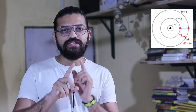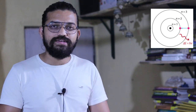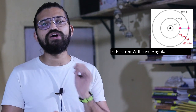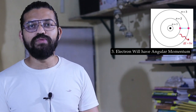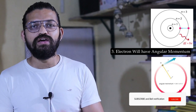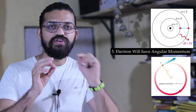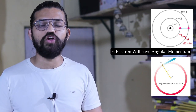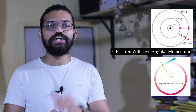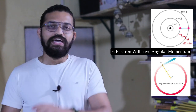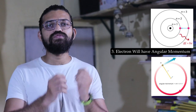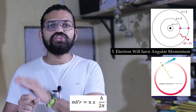The third point postulated by Niels Bohr is that the electron will have some kind of angular momentum. The electron in a fixed orbit has a certain velocity v, is at a fixed distance r from the nucleus, and has mass m. The angular momentum becomes m×v×r, and this equals n×h divided by 2π. Here, n is the integer value corresponding to the shell number — n=1, 2, 3, 4 — and h is Planck's constant.